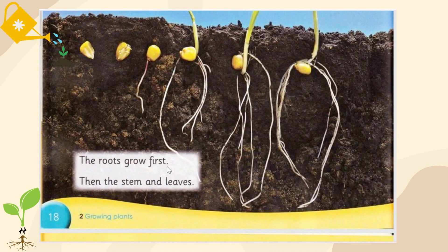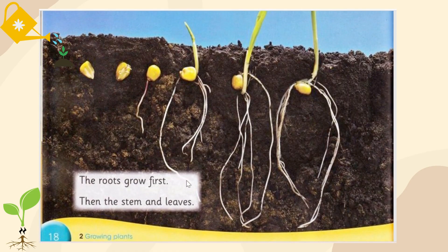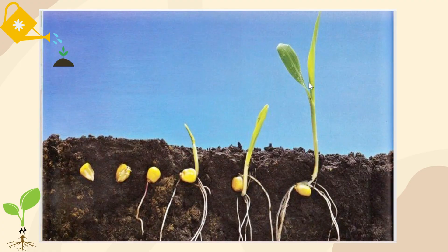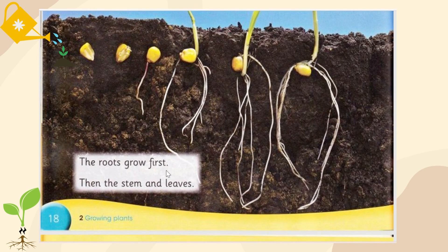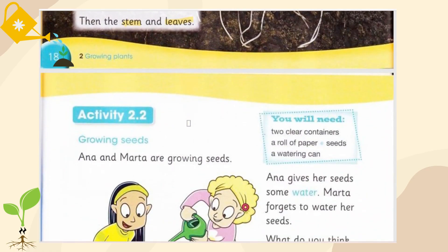The roots grow first. You can see one root here, then multiple roots. Then the stem and leaves follow — first root, then stem, then leaf from the stem. We have to remember: the roots grow first, then the stem and then the leaves. Why do you think the roots grow first? We can answer that question after we do this activity.